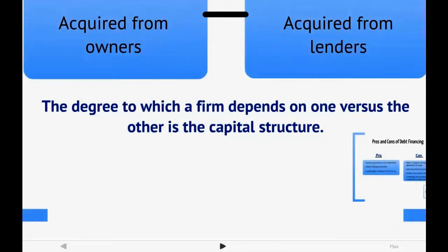These two forms — debt and equity — comprise what we call the capital structure. So if I say a firm's capital structure is 60-40, that could mean the company is financed with 60% debt versus 40% equity. From an investor standpoint, this allows you to determine how much ownership is spread among different investors versus how leveraged a company is with debt.